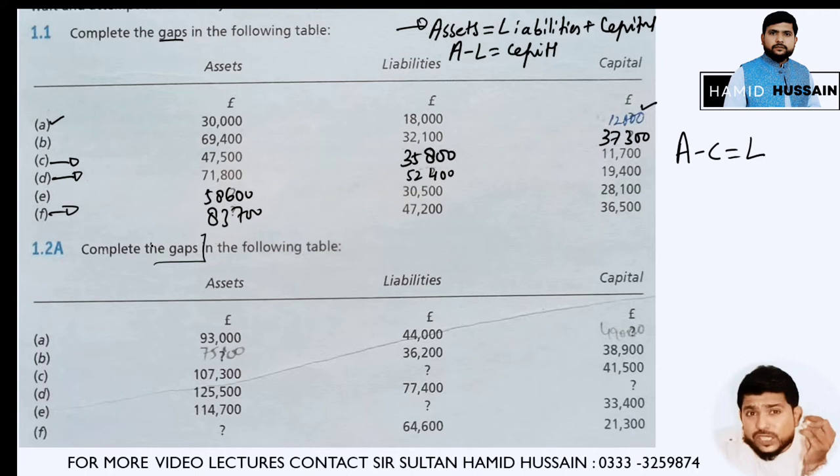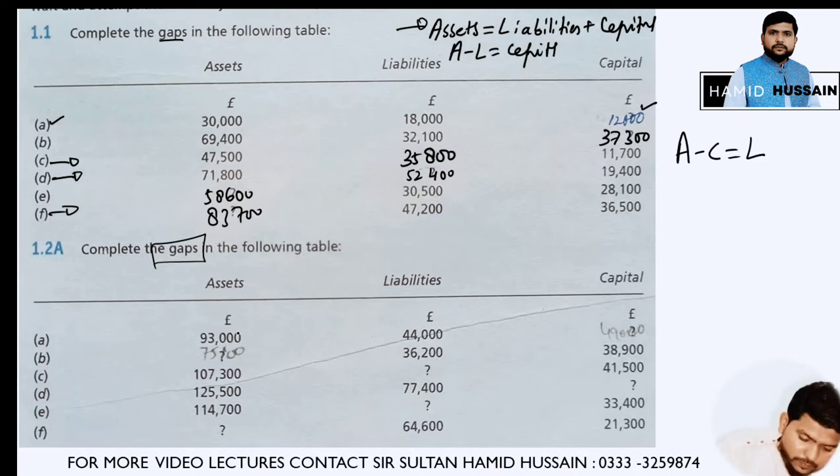In question 1.2 part E, you need to find the capital. Assets are given as 93,000 and liabilities are given as 44,000. You need to subtract liabilities from assets: 93,000 minus 44,000, and you will get 49,000.